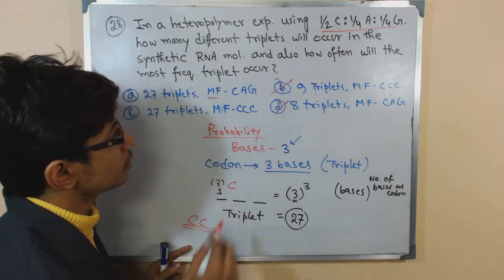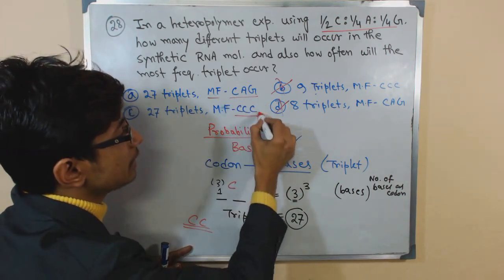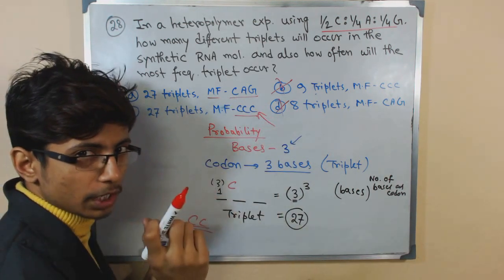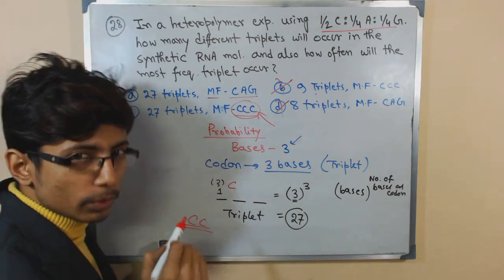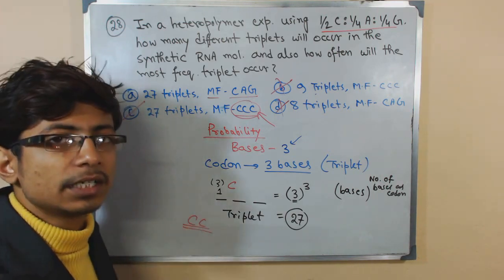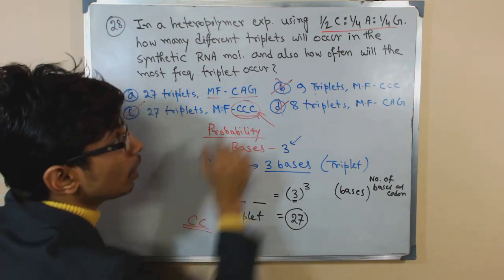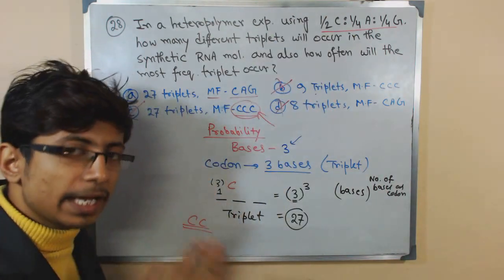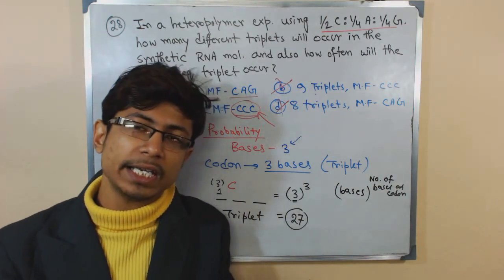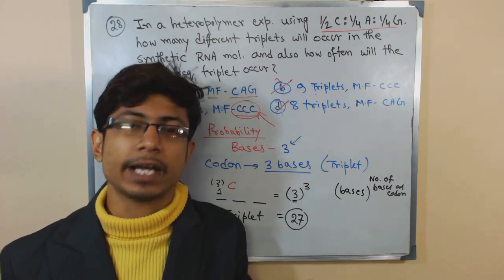You can see two options: CAG and CCC. Now we know that placing C is always an easier task here, so this is the best choice for this answer. Yes, this is the answer: 27 triplets are possible, most common will be CCC because we have 50 percent of the C there. It is more probable to put a C in any position of the codon than A or G. That's it guys.